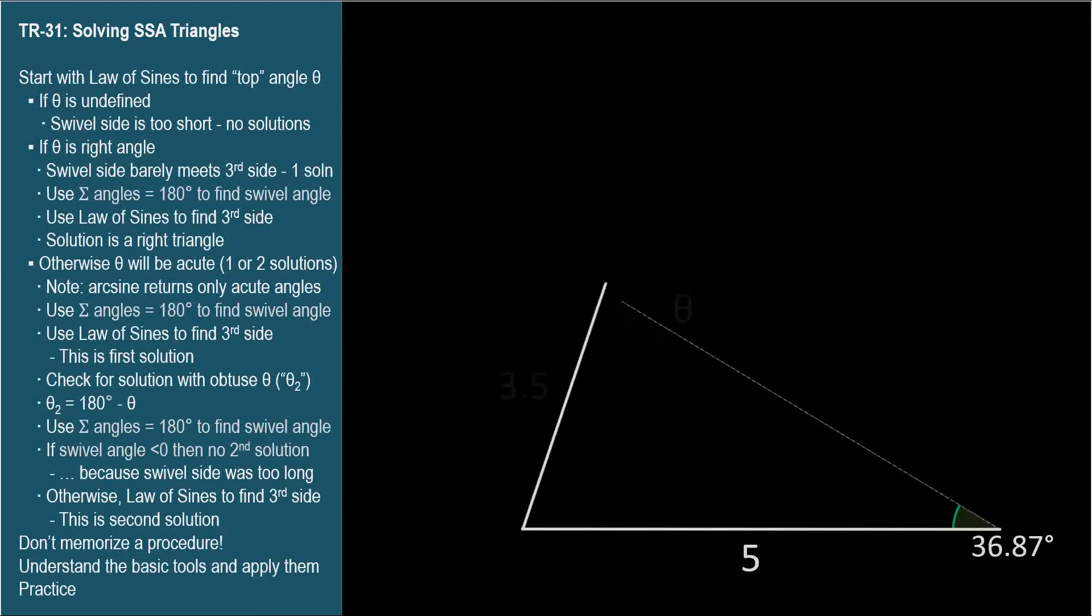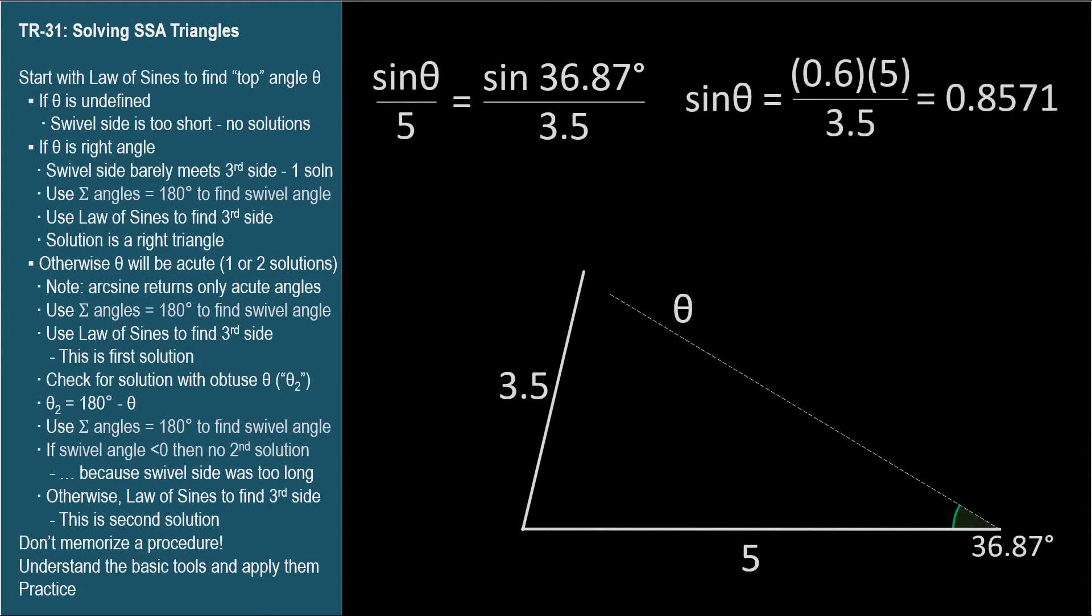Now let's increase the length of the side opposite the given angle to 3.5. Sine theta over 5 equals sine 36.87 degrees over 3.5. We end up with sine theta equals 0.8571. Arc sine 0.8571 equals 59.00 degrees.